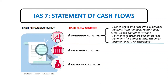Other operating activity examples include receipts from royalties, rentals, fees, commissions, and other revenues; payments to suppliers and employees, which are within the operating cycle of the firm; payments for admin and other expenses; and payments and refunds for income taxes. However, if income taxes paid are directly related to either an investing activity or a financing activity, then those income taxes must be presented in investing or financing activities respectively.